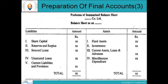Proforma of Summarized Balance Sheet: [Company Name] Limited — Balance Sheet as on [Date]. The left-hand side shows liabilities: share capital, reserves and surplus, secured loans, unsecured loans, and current liabilities and provisions. The right-hand (asset) side shows fixed assets, investments, current assets and loans and advances, and miscellaneous expenditure. Both sides are totaled, and liabilities must equal assets.